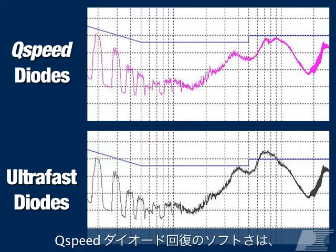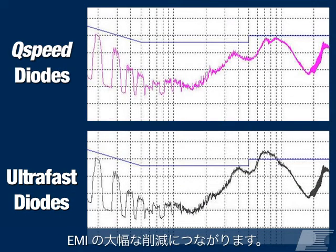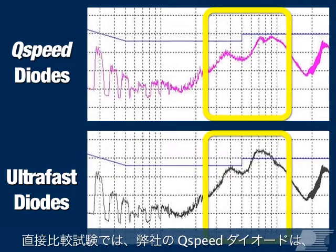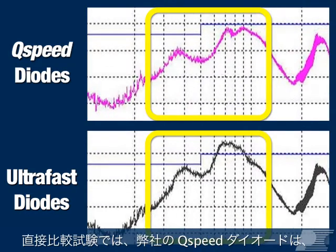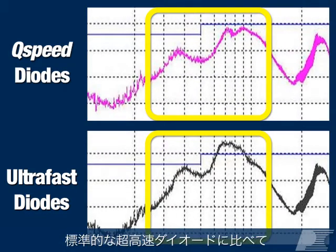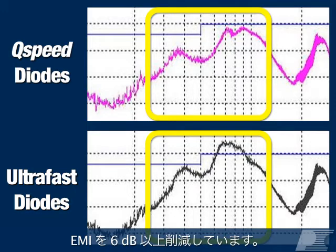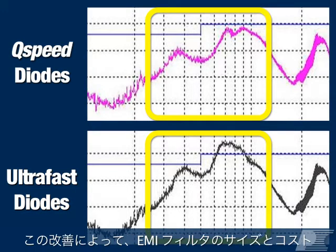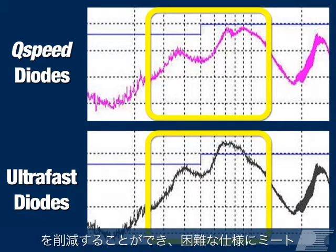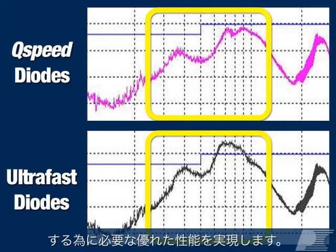The softness of a Q-Speed diode recovery helps to significantly reduce EMI. In a direct comparison test, our Q-Speed diode lowered EMI by more than 6 dB compared to a standard ultra-fast diode. This improvement can reduce the size and cost of the EMI filter or provide the extra performance needed to meet a challenging specification.